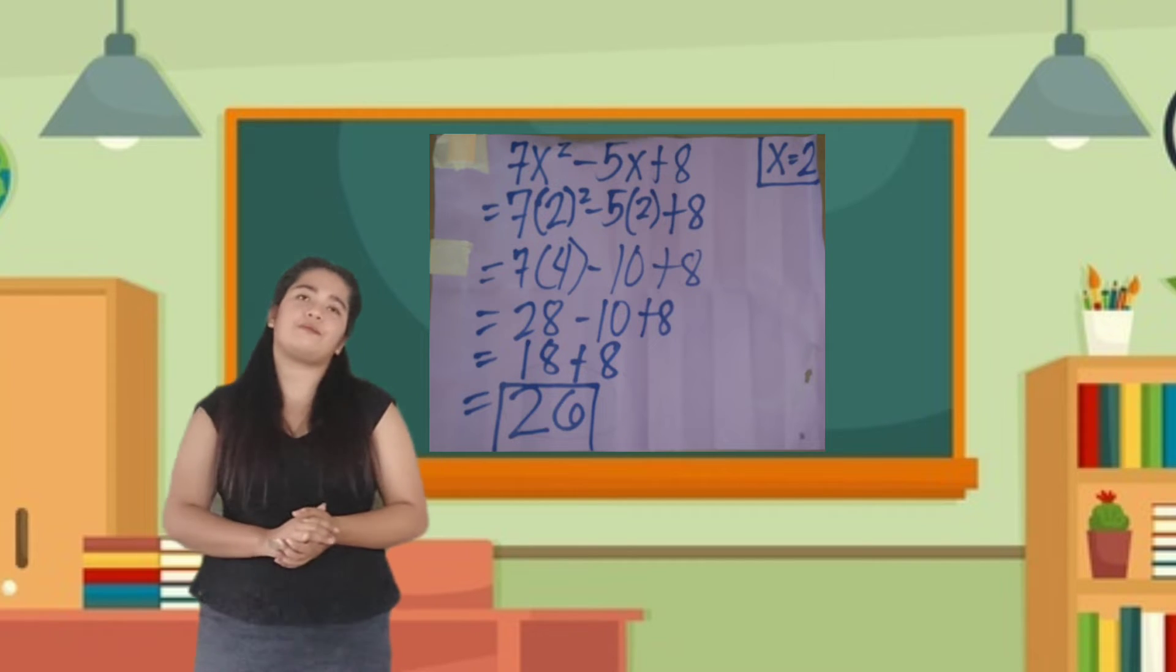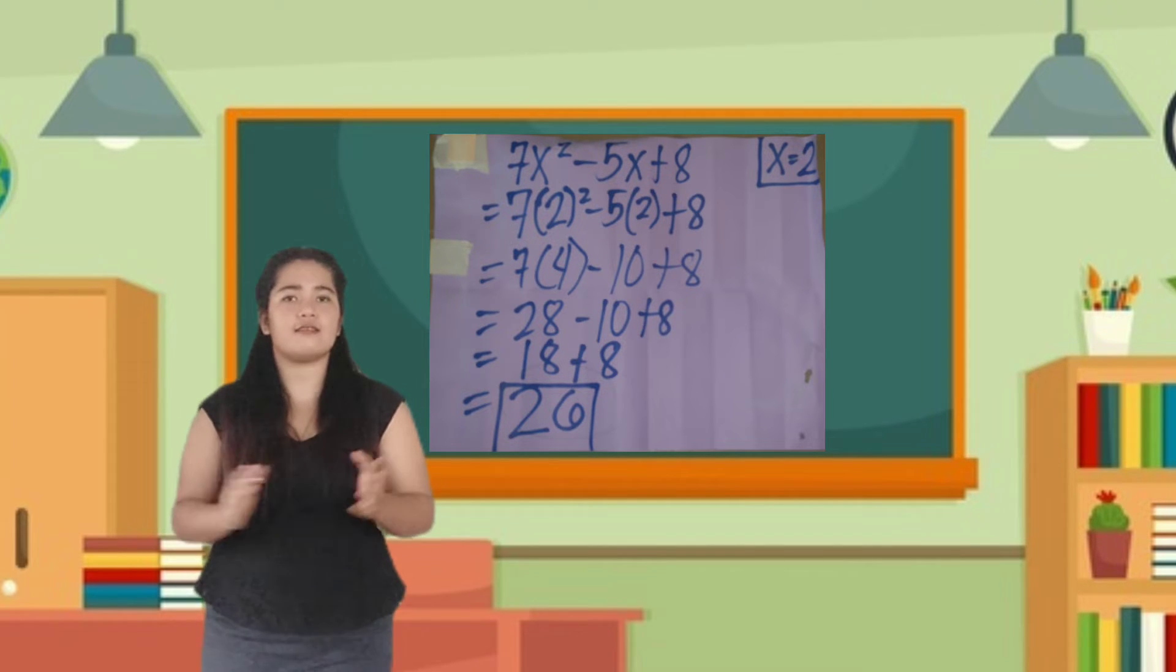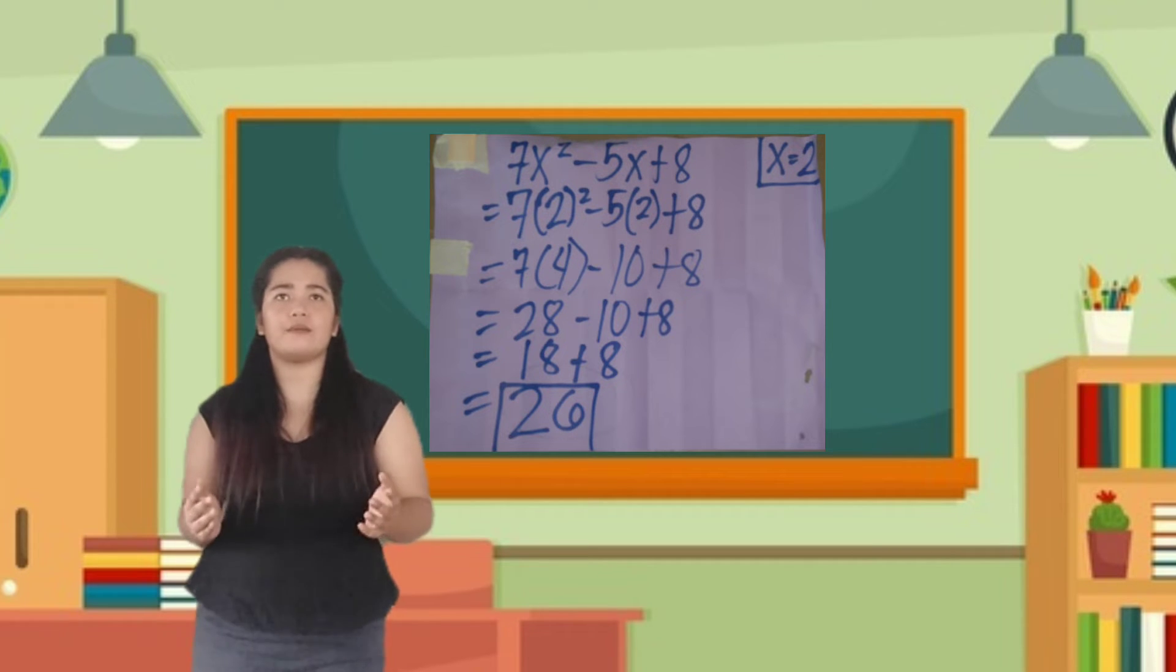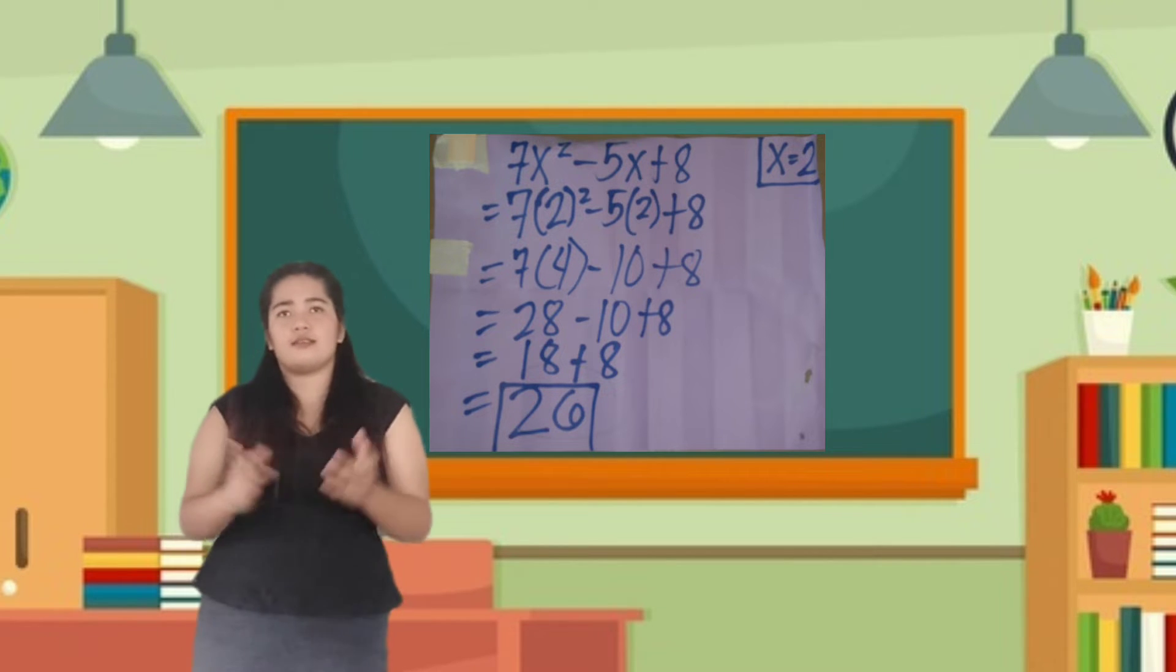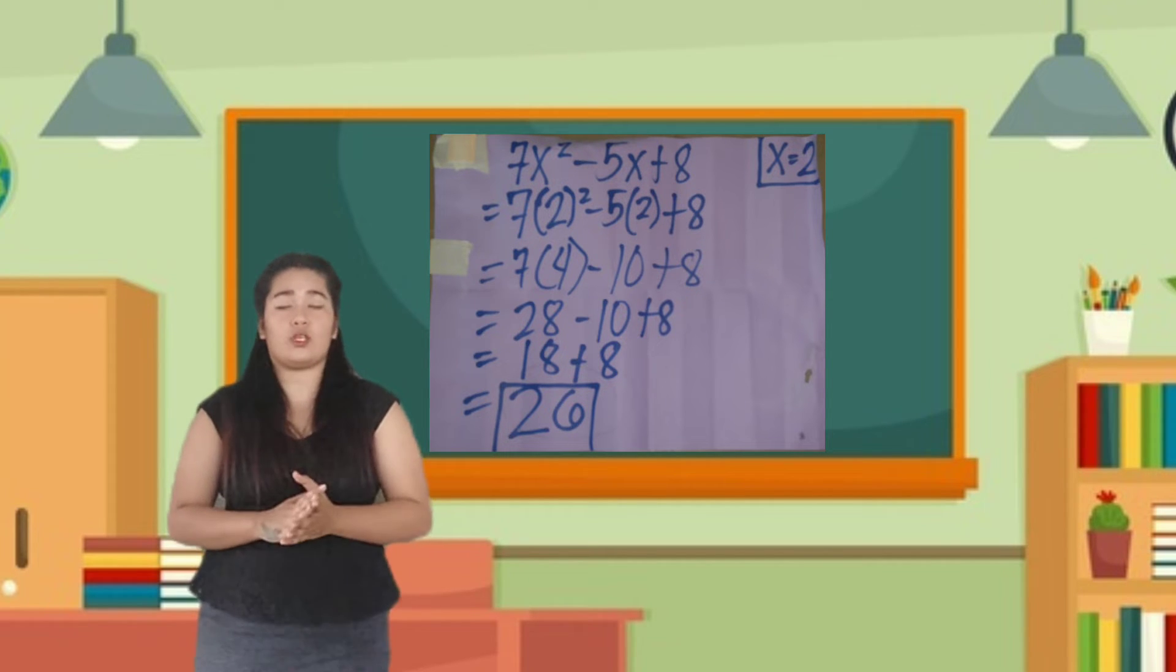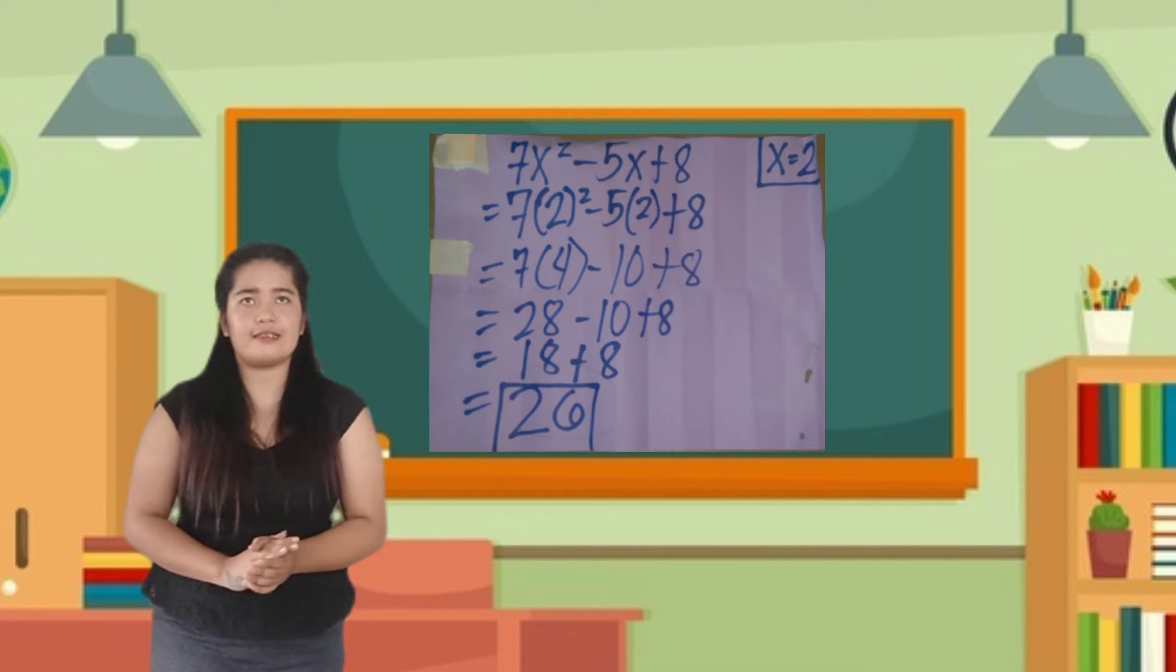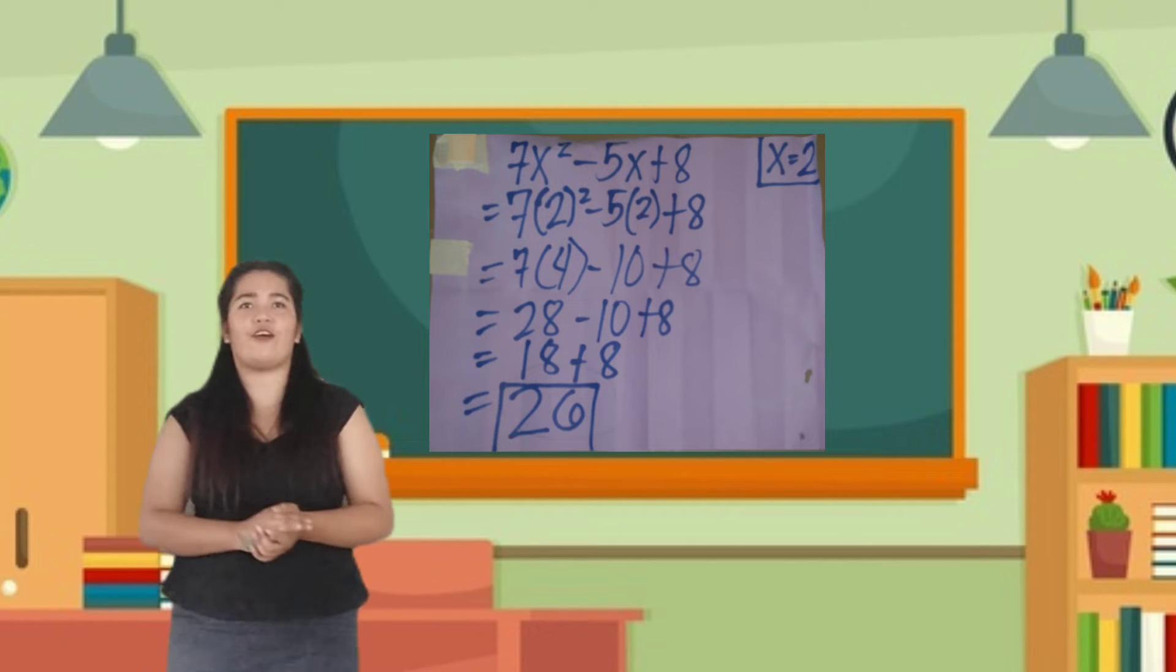Number three. 7X squared minus 5X plus 8 where X is equal to 2. Substitute X into 2. 7 times 2 squared minus 5 times 2 plus 8. So, start on the exponent. 2 squared is equal to 4. So, 7 times 4 minus 5 times 2 is equal to 10 plus 8. So, 7 times 4 is 28 minus 10 plus 8. 28 minus 10 is equal to 18 plus 8. So, 18 plus 8 is equal to 26. Very good.